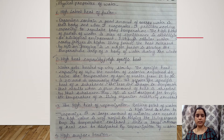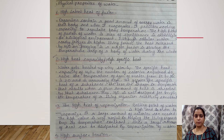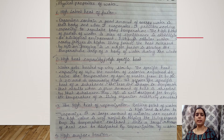This value is usually very high, and the greater the specific heat of a substance, the less the change in temperature when a given amount of heat is absorbed by that substance. This makes water well-designed for keeping the temperature of a living organism relatively constant.